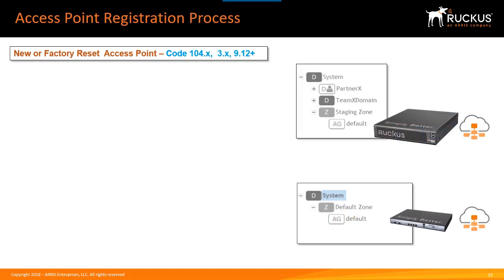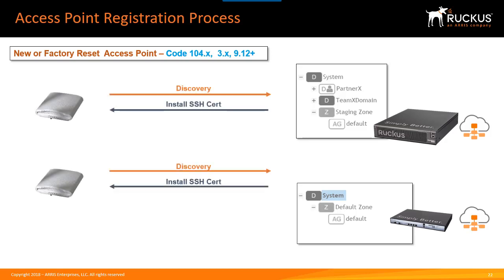The High Scale and Essentials controllers perform mostly the same functionality, but there are a few key differences. In both cases you'll see a discovery and the installation of SSH certificates on the AP from the controller. On the High Scale controller, the AP ends up in the default AP group of the staging zone. Now let's look at what happens with the Essentials edition after the discovery process.